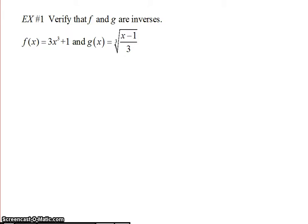For example one, we're going to verify that f and g are inverses. So to verify, we have to compose. We're going to do f of g of x and verify that we get x out, and g of f of x and verify that we get x out. We're going to do either one first, but we are going to verify that we have to do both. So f of g of x - g of x equals this, I'm going to write this in. I'm going to take f of the cube root of x minus 1 over 3.